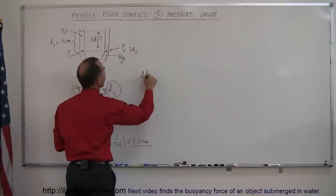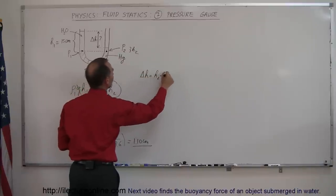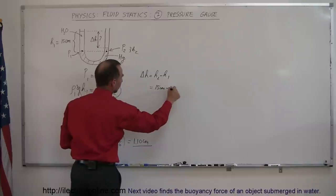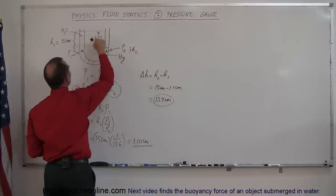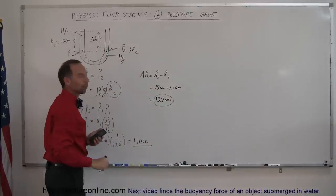And of course ultimately, since we want to know the difference in the height, in this case delta h would simply be equal to h2 minus h1, which is 15 centimeters minus 1.1 centimeter. So therefore this is 13.9 centimeters of difference between the two columns, water on the left and mercury on the right.